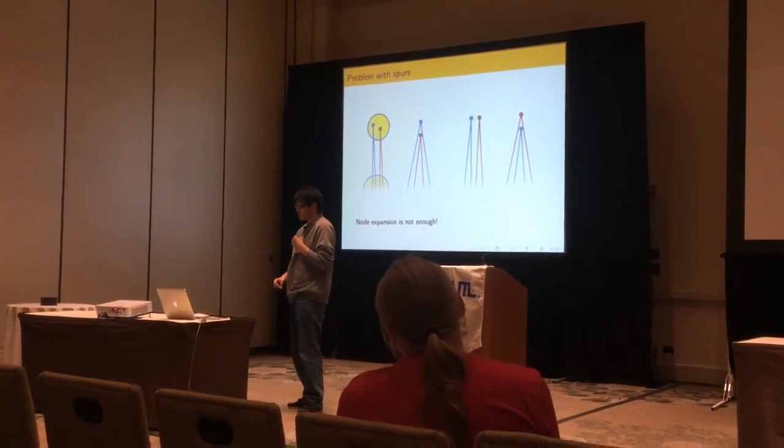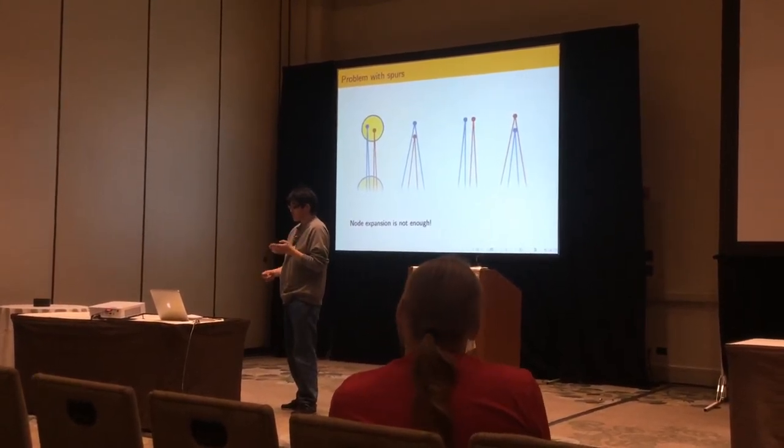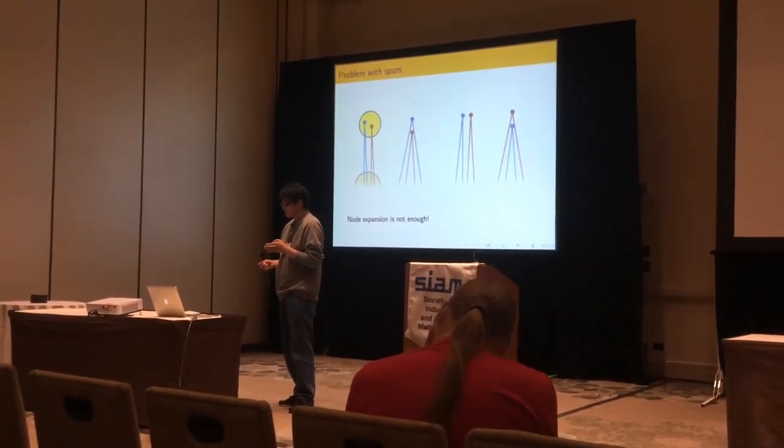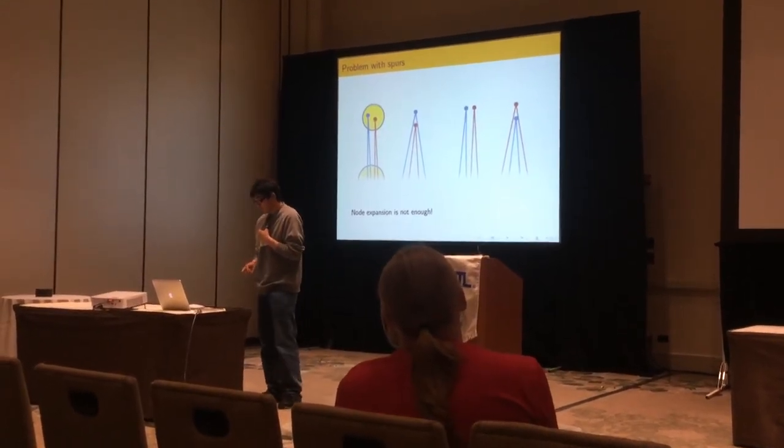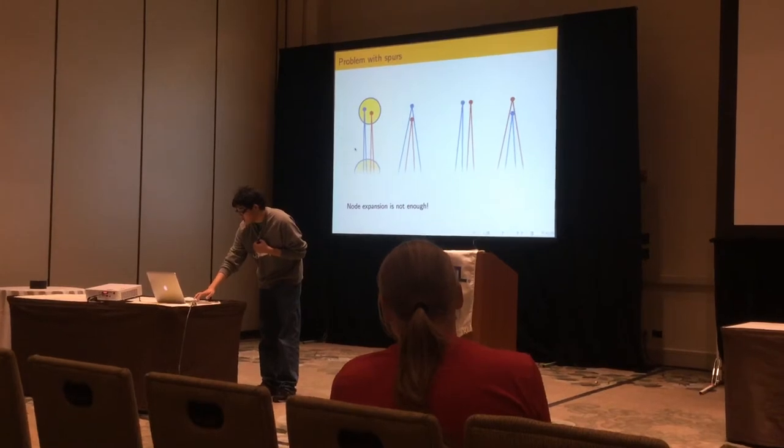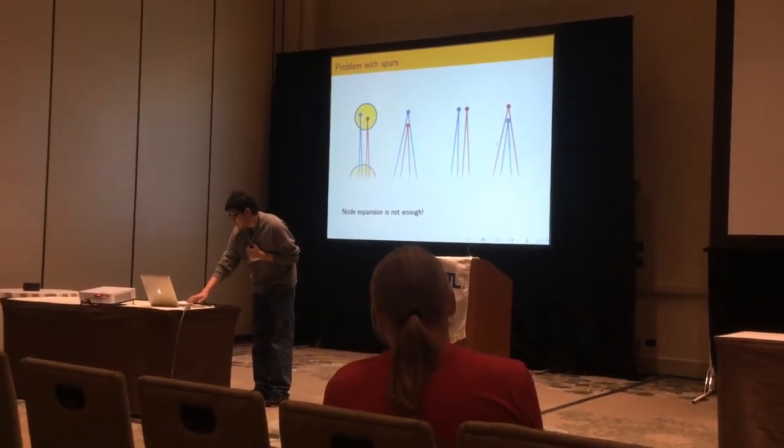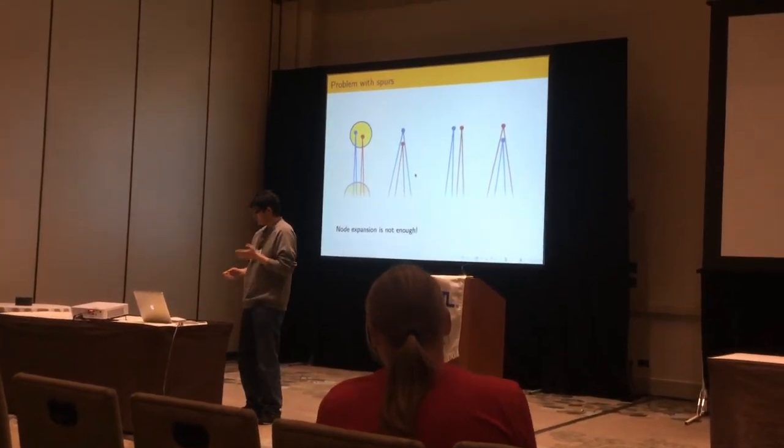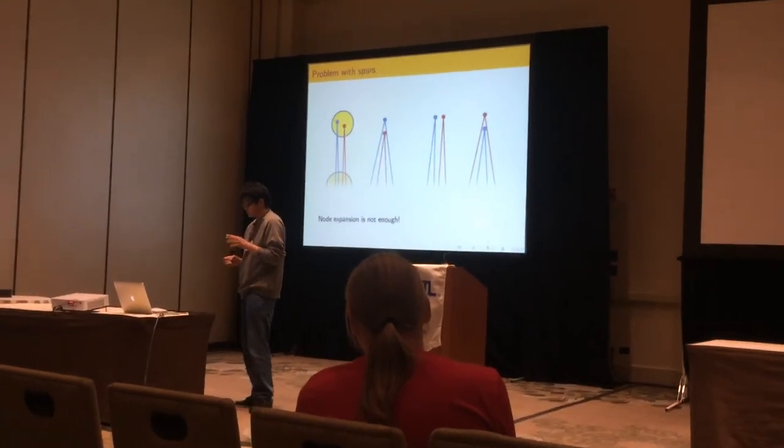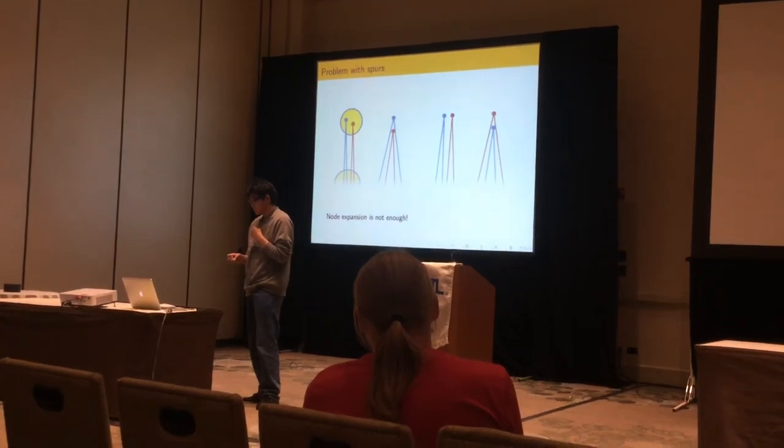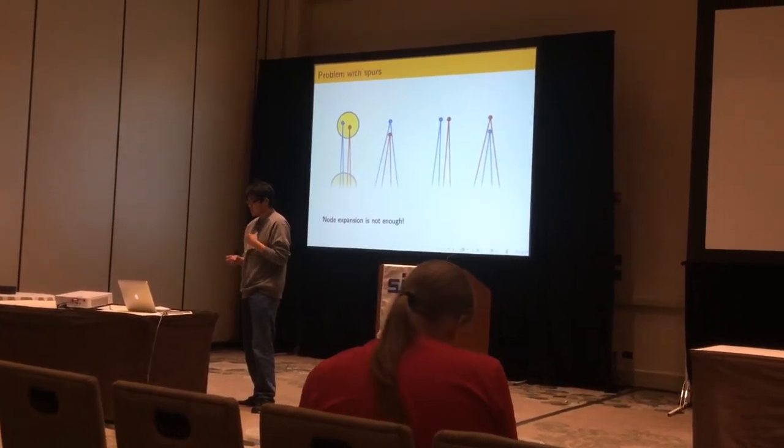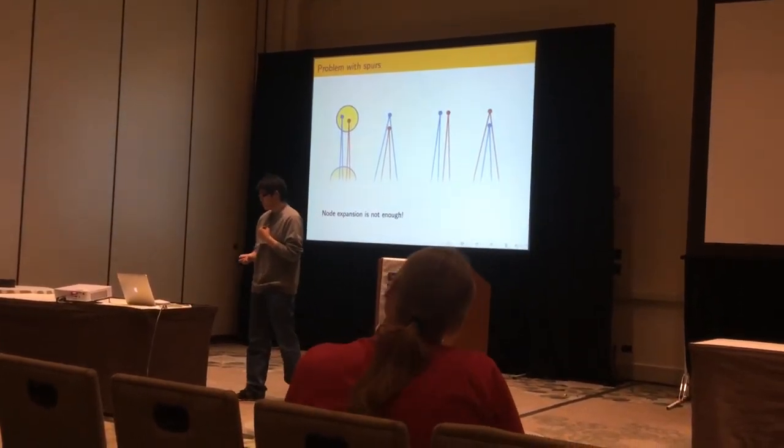However, if we have spurs, it's no longer the case that we get a two-planar graph. So if there's two spurs, there are actually four ways to arrange this, arrange this twist. And the fact is, the number of configurations is exponential with the number of spurs.